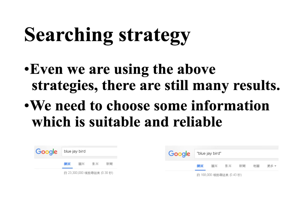However, even when using the above strategies, there can still be many results — for example, around 100,000. So we also need to choose information that is suitable and reliable. How can we know if it is suitable and reliable? There are some hints for that.